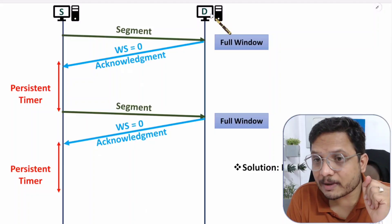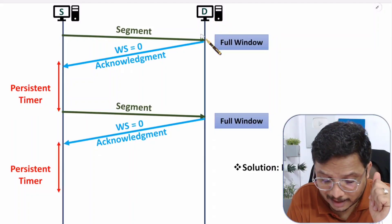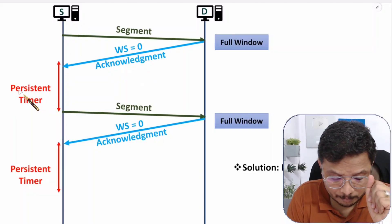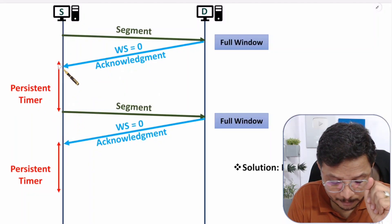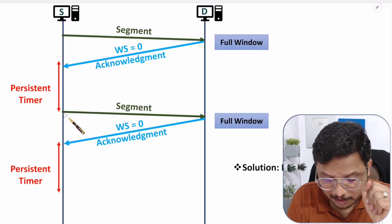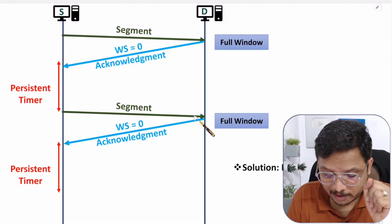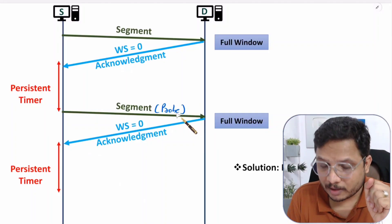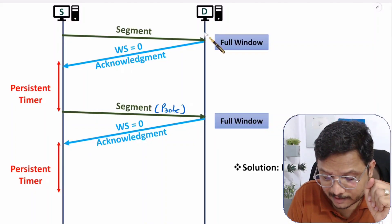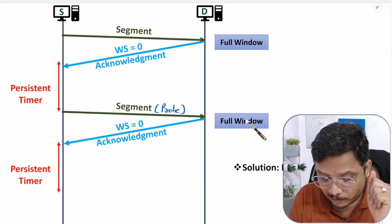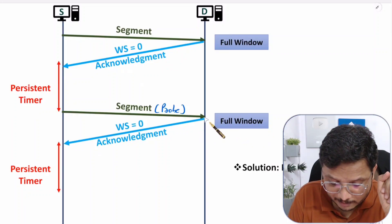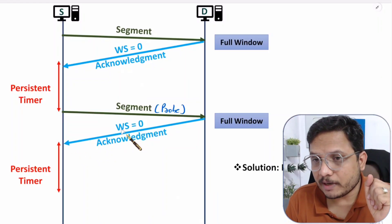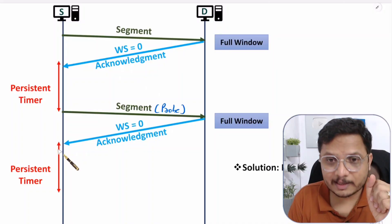When the window at receiver is full, the sender will run a persistent timer. After the persistent timer expires, it will send a probe frame. When that probe frame reaches the receiver and the window is still full, the receiver will again advertise window size equal to zero, and the persistent timer will run again.